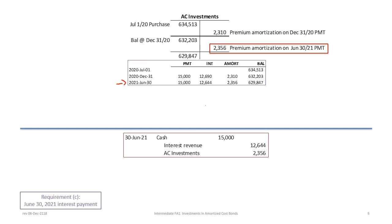Our next interest payment date is June 30th 2021. Following the same approach, the balance from the end of last period, $632,203, times 2% gives us interest revenue of $12,644. The difference between $15,000 and $12,644 is premium amortization of $2,356. We debit cash $15,000, credit interest revenue $12,644, and credit amortized cost investments $2,356. The T-account now shows a balance of $629,847.